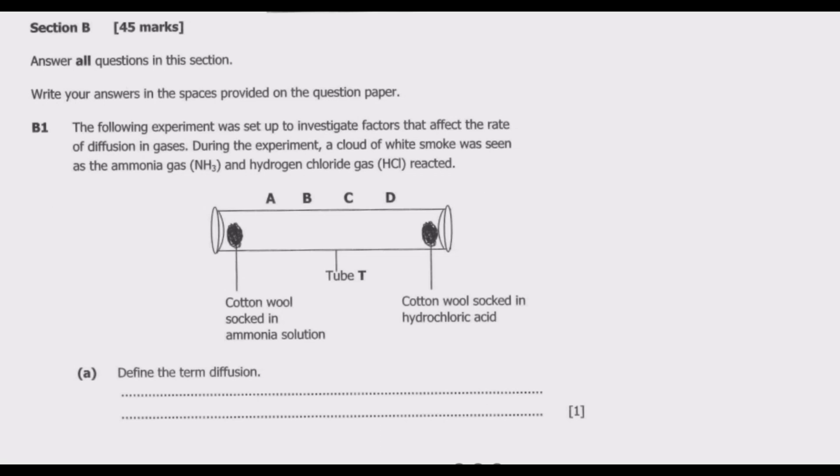Then we have the setup as you can see: we have cotton wool soaked in ammonia solution, then we have cotton wool soaked in hydrochloric acid, and then of course we have tube T. Question A: define the term diffusion.